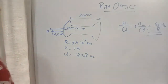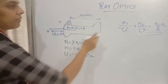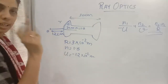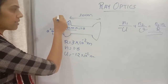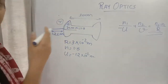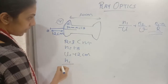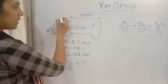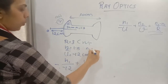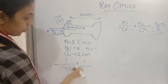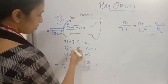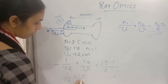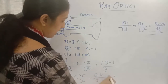The ray of light is passing from rarer to denser medium. n1 is the refractive index of air, which equals 1. So using the formula: n1 divided by minus u gives 1 divided by 12. n2 is 1.5 for glass. So we get: 1 by 12 plus 1.5 divided by v equals n2 minus n1 divided by r, which is 0.5 divided by 3.